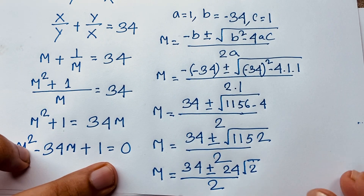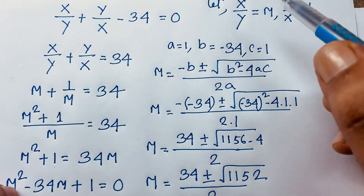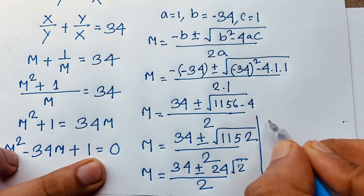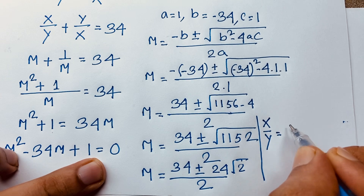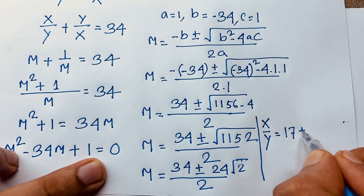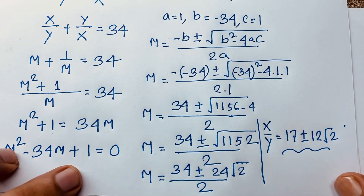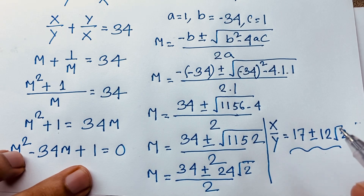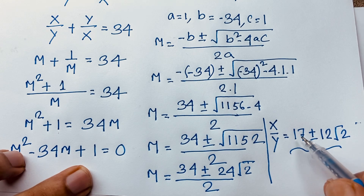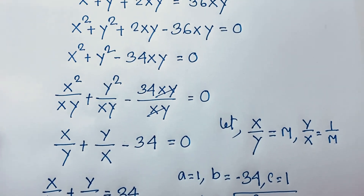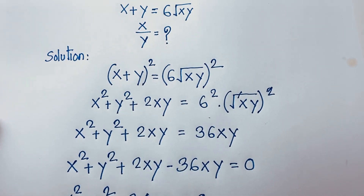Recalling that m = x/y, we get x/y = (34 ± 24√2) / 2, which simplifies to x/y = 17 ± 12√2. This is the final answer — a real solution with no complex values. Thank you all; if you enjoyed this video please subscribe for other interesting videos. Goodbye, take care.